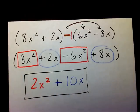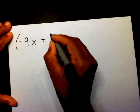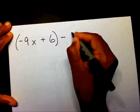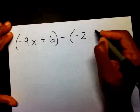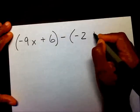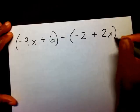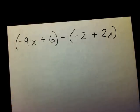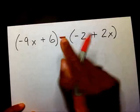Alright, let's try another one. I have negative 9x plus 6 minus negative 2 plus 2x. Again, the first thing you notice is that we're subtracting.